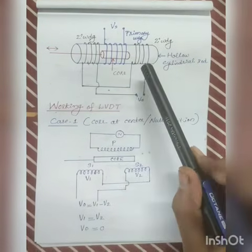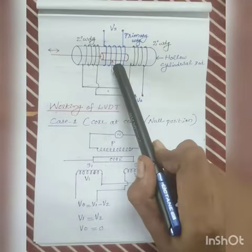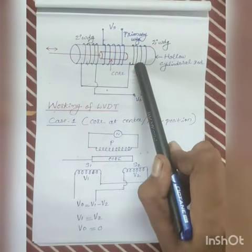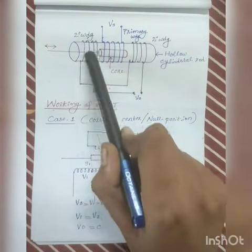The earlier diagram was a schematic of LVDT. This figure shows the actual assembly of an LVDT. Primary and two secondary coils are bound on a hollow cylindrical rod.